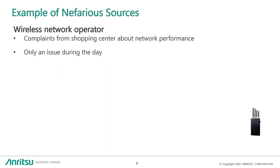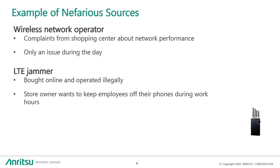Another example of a nefarious source: a network operator was getting complaints of performance issues in a certain neighborhood and was asked to go out and investigate. The issue was only happening during the day and seemed to clear up at night. They found that a store owner in a shopping center had bought an LTE jammer online and was operating it illegally. Essentially, this store owner just wanted to keep employees from being on their cell phones during work hours — he was tired of telling employees to put down their phones. We're going to talk about how that type of interference is hunted down and eliminated.